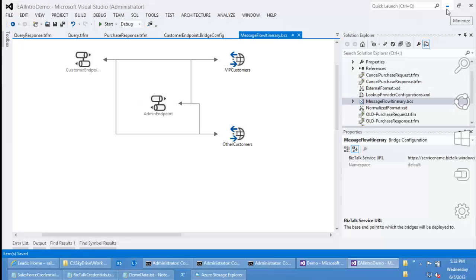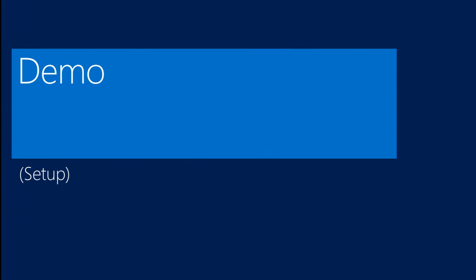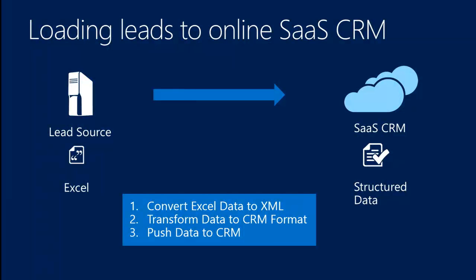Now we'll actually go back to the real extensibility demo. The end solution I want to build is: I have an Excel file which has information about leads. I need to get this lead information from my Excel document into an online SaaS CRM application — Salesforce. Since this is an XML bridge, we need to convert the Excel data to XML so that we can use XML validation and transformation. We then need to transform the data to the CRM format, and then finally get the data into the CRM application.